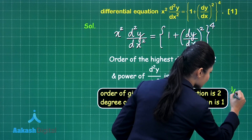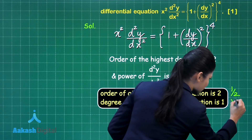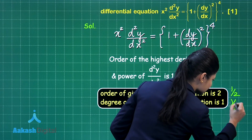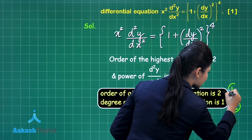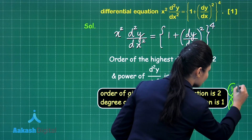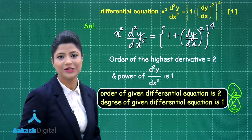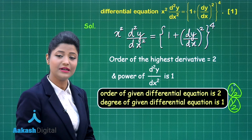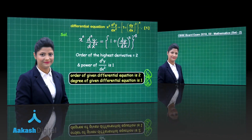You will obtain half marks for answering the order and half marks for answering the degree, so half plus half gives you total 1 mark for this question. I hope this is clear to you. Let us proceed to our next question.